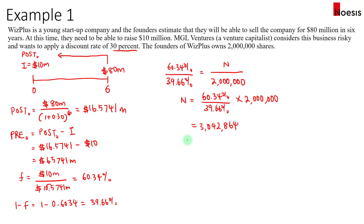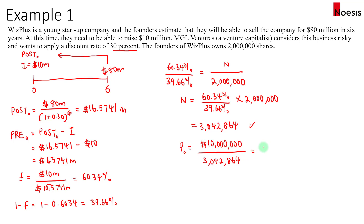What is the price paid per share for the shares owned by the VC? The price paid per share by MGL will be the amount they invested — $10 million — divided by the number of shares obtained, which is 3,042,864 shares. So that equals $3.29. At the first round the price per share is always lower, but as the company becomes more valuable, the price per share will increase in the second and third rounds of financing.